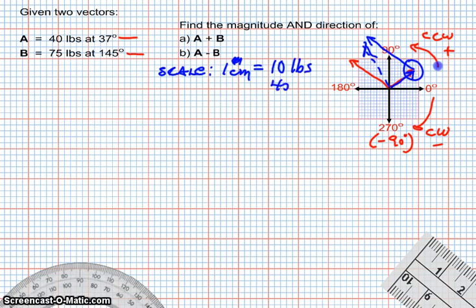That means for 40 pounds, which is vector A, that's going to be 4 centimeters. And 75 pounds, which would be vector B, is going to be 7 and a half centimeters.